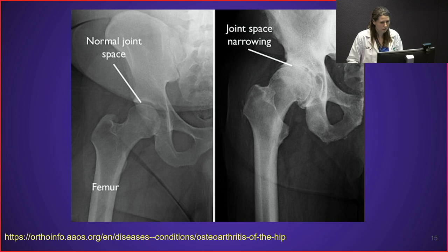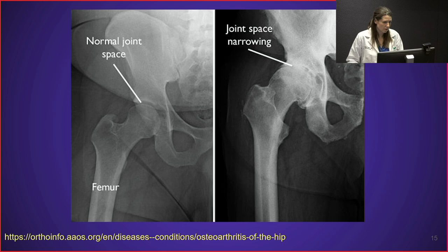The hip is another common location for osteoarthritis. On the normal side, you can see a nice joint space preserved between the pelvis and leg bone. As arthritis develops, that joint space starts to narrow and bone spurs develop on the sides, preventing the joint from moving.